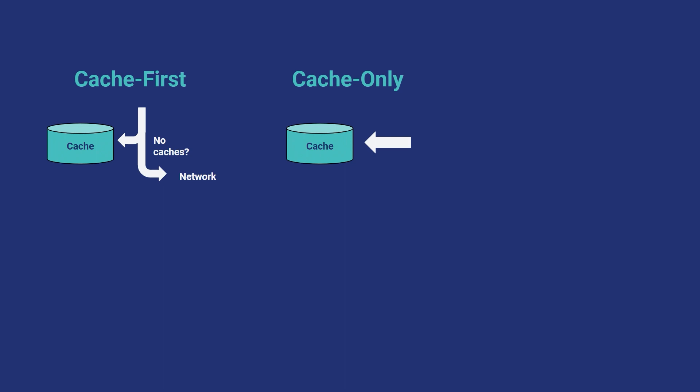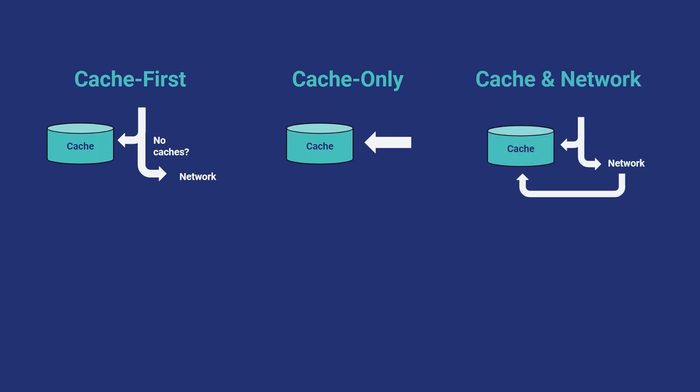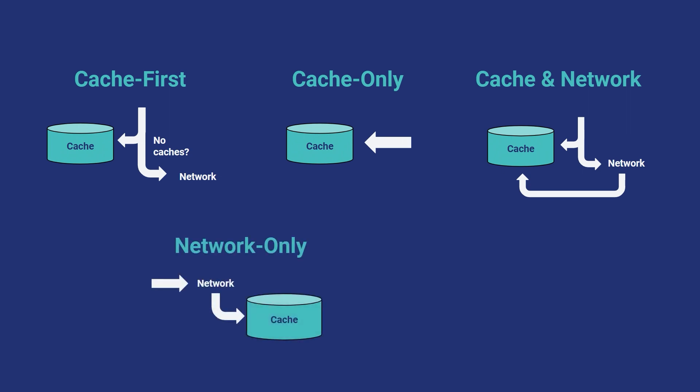Cache only — very self-explanatory. Cache and network — very interesting, like the highest consistency you could have. Go and get this data, update it after the fact. Network only, and then no cache — I guess you could use that one.